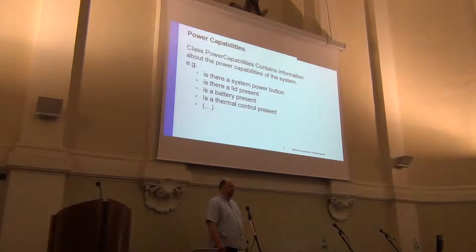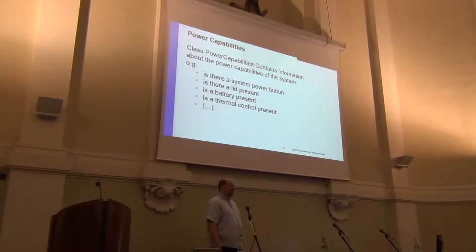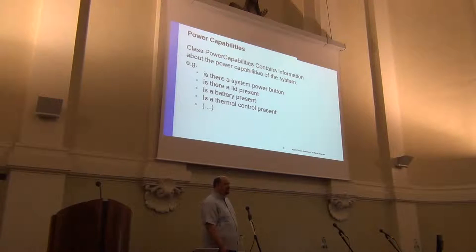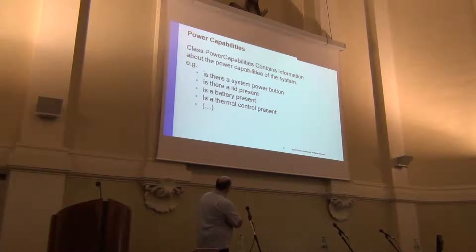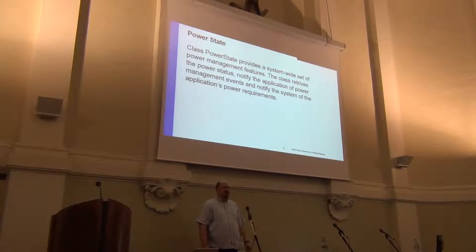I want to start with the power capabilities because they're not really system tools in this case. But looking around, I see all the laptops and tablets available here that everybody's using. Power capabilities help me to identify the machine and figure out what kind of tests I can run afterwards. Also for applications, it's nice to know: do I run on a laptop? Is there a lid press? What happens if the lid is closed? Is there a battery present? Is there a thermal control present? The power state actually allows you to control the power management features of today's Windows.